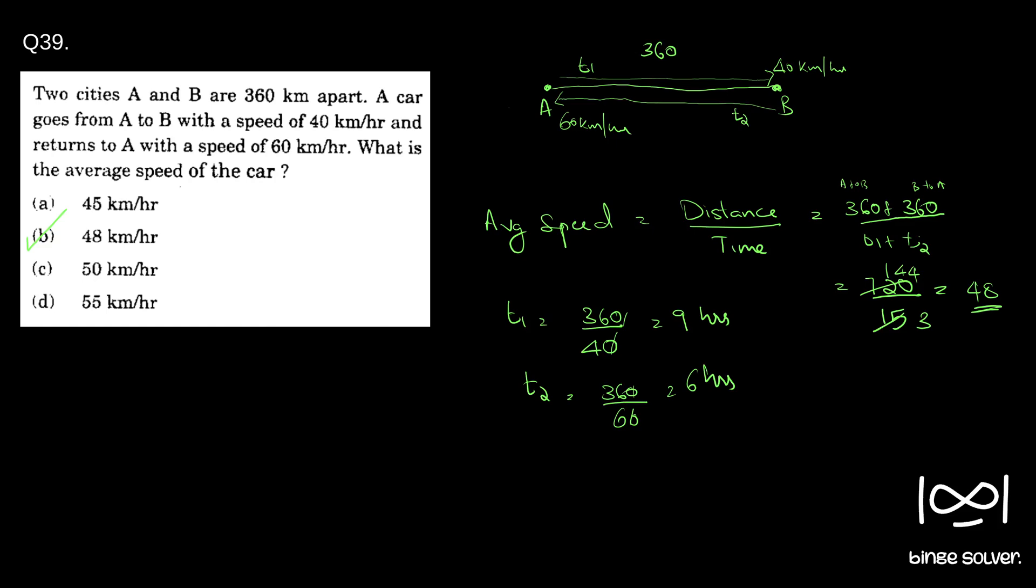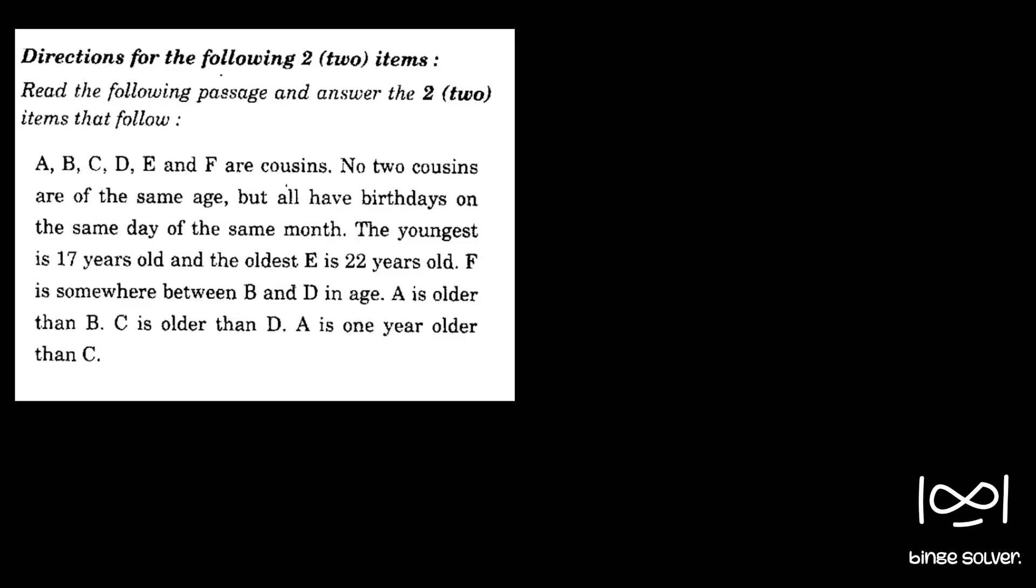Moving on to the next question, question 40. Directions for the following two items: Read the following passage and answer the two items that follow. A, B, C, D, E and F are cousins. No two cousins are of the same age but all have birthdays on the same day of the same month. The youngest is 17 years old and the oldest E is 22 years old. F is somewhere between B and D in age. A is older than B. C is older than D. A is one year older than C.